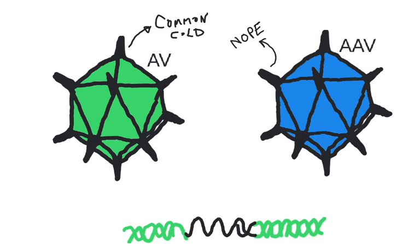If it did so randomly, this might cause cancer years later, but AAV always inserts its DNA into the same place on chromosome 19.